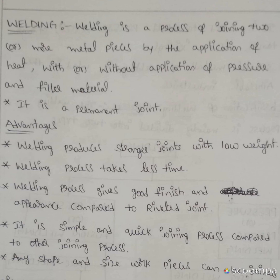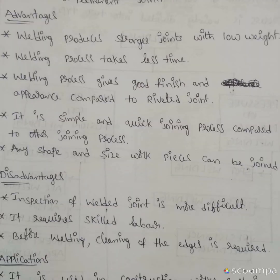Welding is a permanent joint. A permanent joint means the joint which cannot be disassembled. If we disassemble that joint, it will be damaged. That type of joint is called a permanent joint.